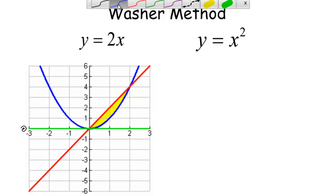We're going to take the region between y equals 2x and y equals x squared and revolve it around a bunch of different axes to see how that changes. We're going to do each of these solids of revolution with both the washer method and the shell method so that we can compare and contrast the setup for both methods.